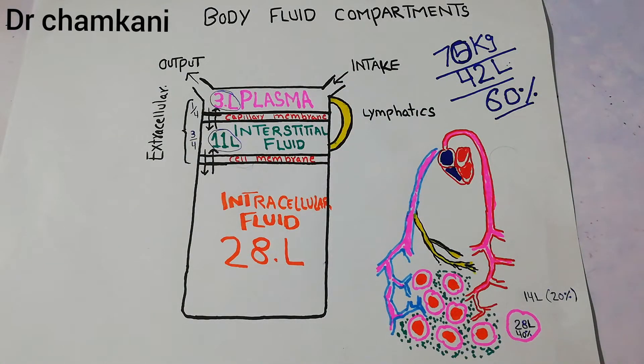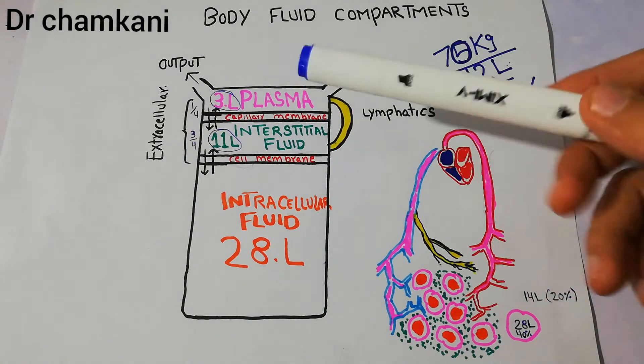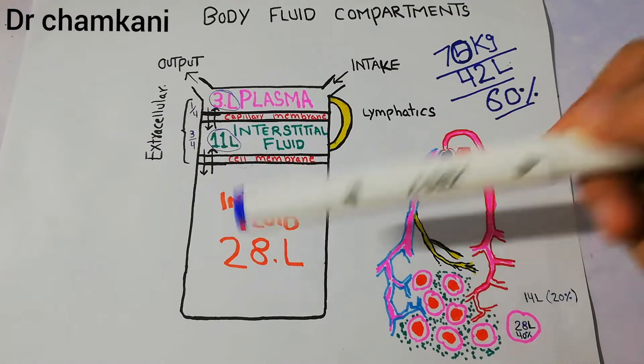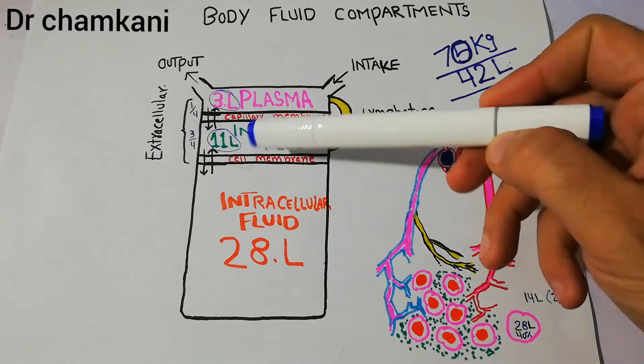This fluid is basically distributed in two main categories: the extracellular fluid and the intracellular fluid.